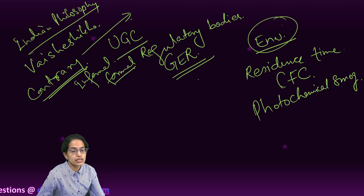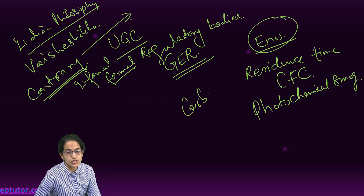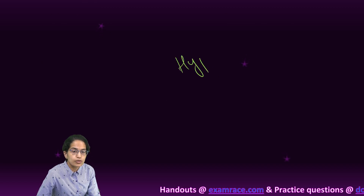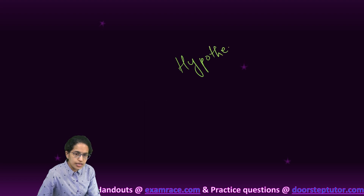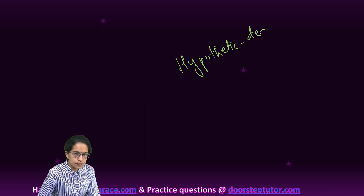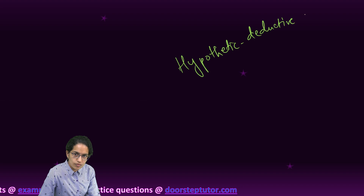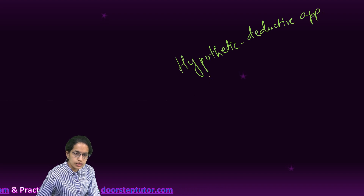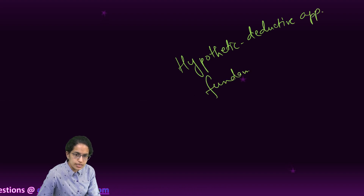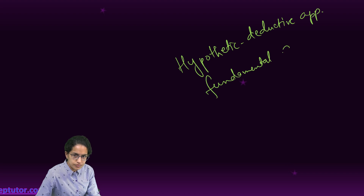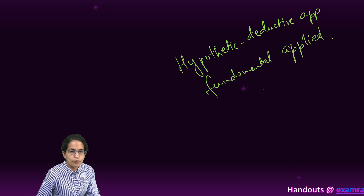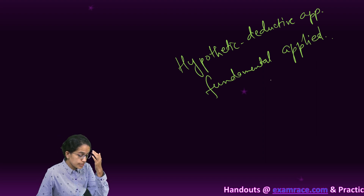Then there were questions related to carbon cells and efficiencies of carbon cells. Questions were also pertaining to the research section, which were mainly the hypothetico-deductive approach. There were also questions related to fundamental research and applied research, and steps in research — plan, observe, act — that we have been covering.